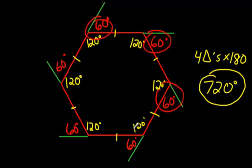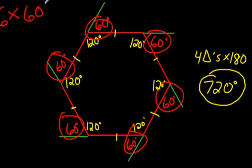How many 60s do you see? One, two, three, four, five, six. There's six 60s. So, six times 60 degrees, what do you get? 360.